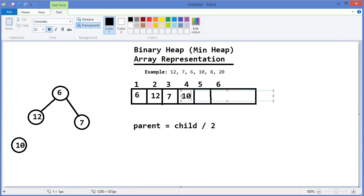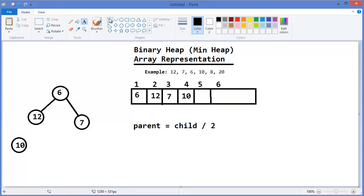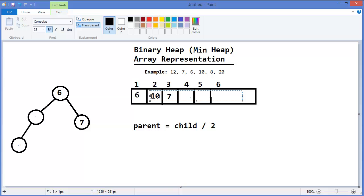Then next value is 10. Now you compare with its parent which is 12. So 12 is greater than 10, so I need to swap this. 4 is the child, so 4 divided by 2 which is 2, that means 12 should come here and 10 should come here. This is 10, this is 12. So here is 10 and this is 12.